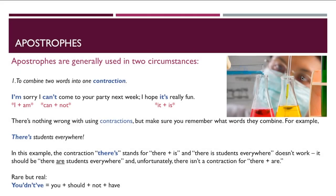Now let's talk about apostrophes. Apostrophes are generally used in two circumstances. First, they're used to combine two words into one contraction. I'm sorry, I can't come to your party next week. I hope it's really fun. Here, "I'm" is a contraction that combines I and am, "can't" combines can and not, and "it's" combines it and is.